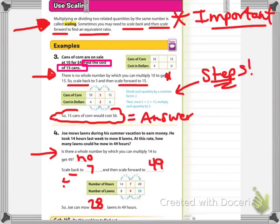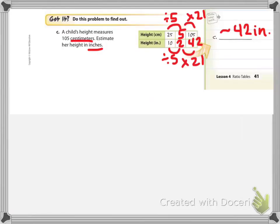Looking at example four, Joe mows the lawn during summer vacation to earn money. He took 14 hours last week to mow eight lawns. At this rate, how many lawns could he mow in 49 hours? Is there a whole number by which you can multiply 14 to get 49? That would be no. So what you would need to do is scale back to 7. Scaling back means you are dividing. So divide by 7 and then scale forward to 49. So if you look at the chart, 14 divided by 2 is 7. You're scaling back, but then I can multiply and say 7 times 7 is 49. So 8 divided by 2 is 4, and 4 times 7 is 28. So Joe can mow 28 lawns in 49 hours. Now I want you to pause, try the got it, come back and check your work.